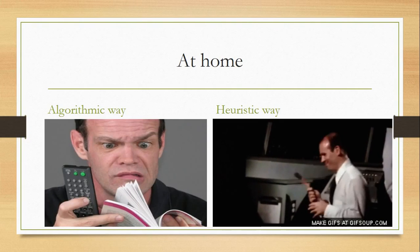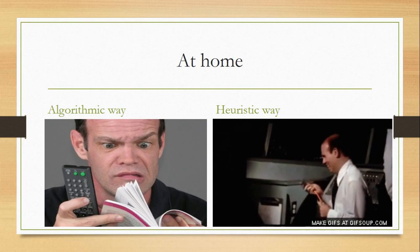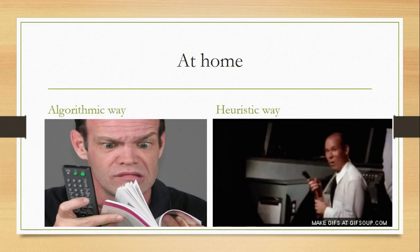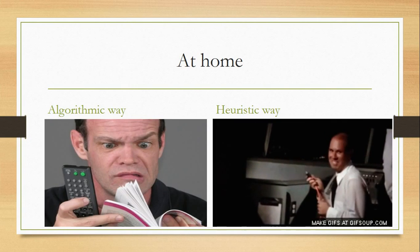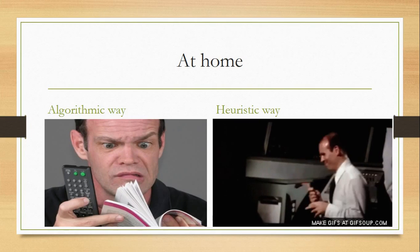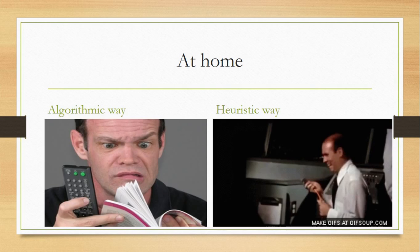First up in the situation of being at home, an algorithmic way would probably be finding the manual to something and figuring out what's wrong by reading through it. Or you could go the heuristic way and work backwards, possibly by figuring out if you plugged it in or not. Make sure you plug in your electronics before you go ahead and call in the repairman, okay?